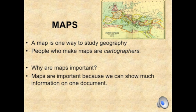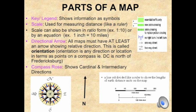You can see where the mountains are, the lakes, the rivers, the oceans, the cities, the capitals. You can even have population maps that show you where the greater amount of people are located. But here are the four parts of a map. You need to bring these written down into class or have put them in the Google Doc.